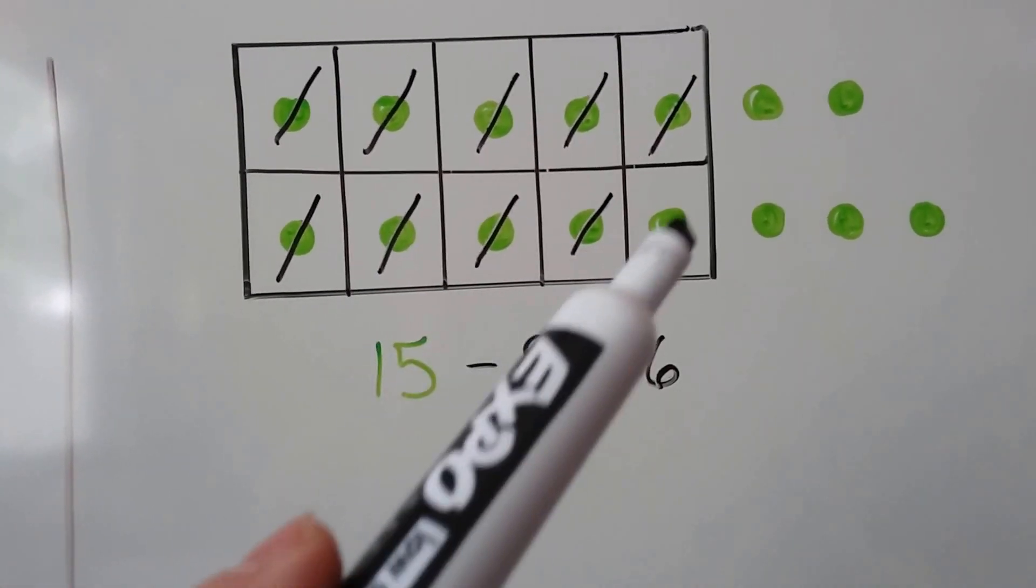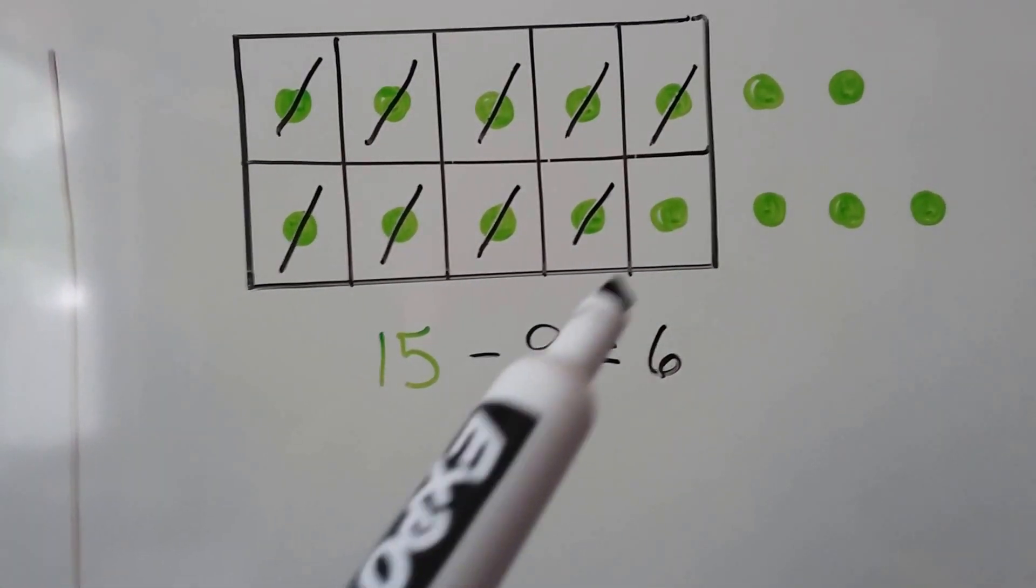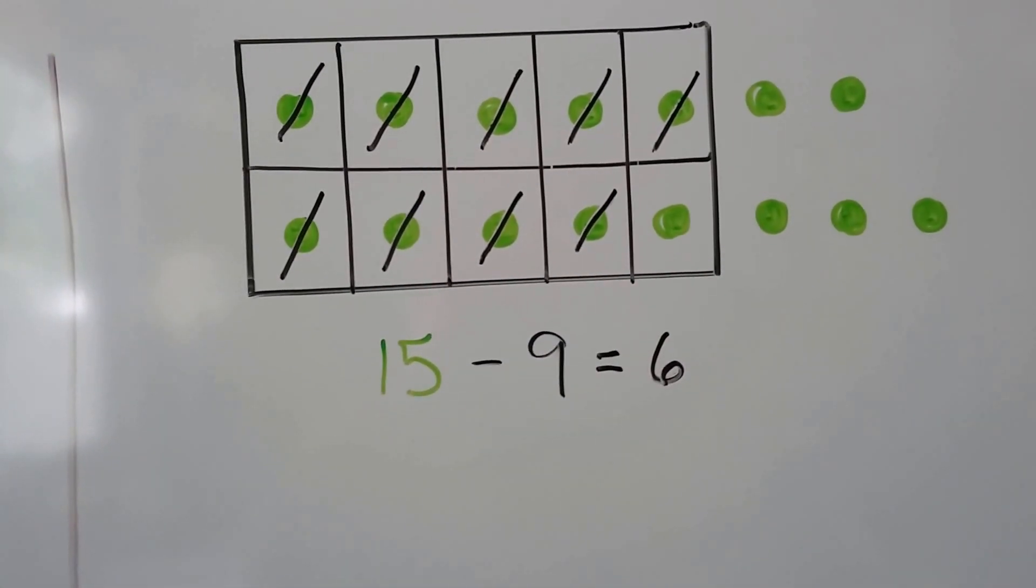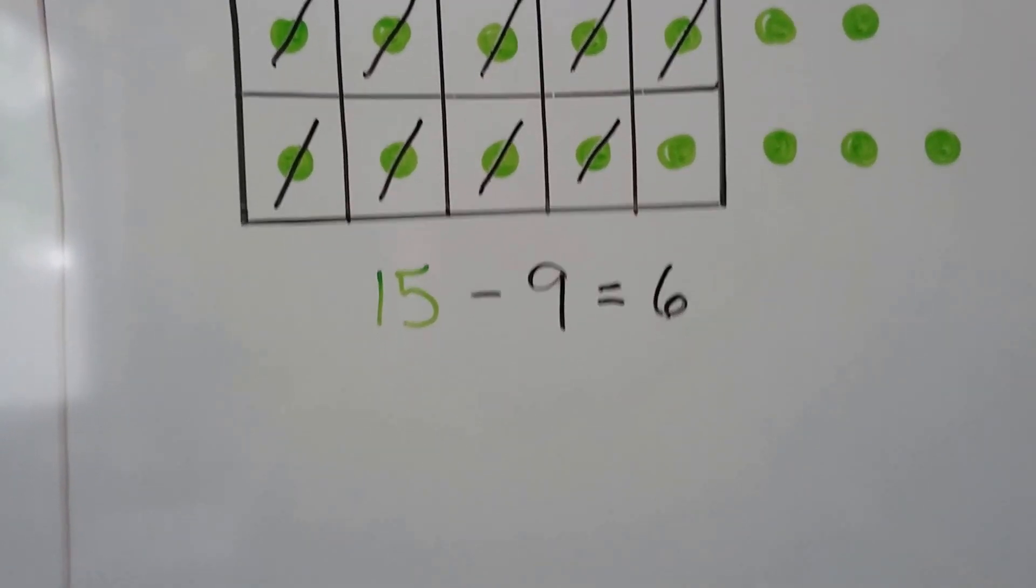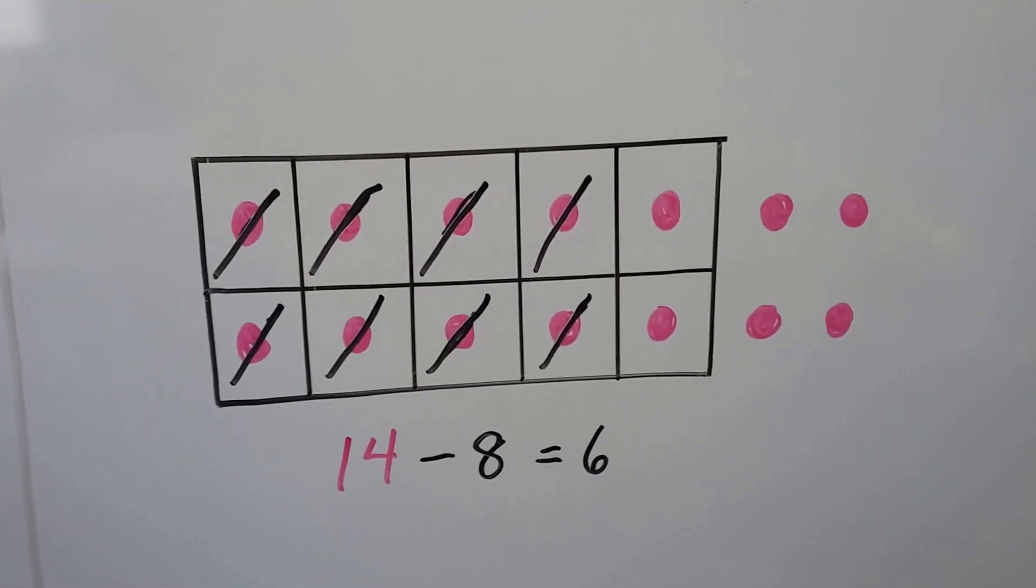You see how we removed all of the counters except 1 because 9 is 1 less than 10.